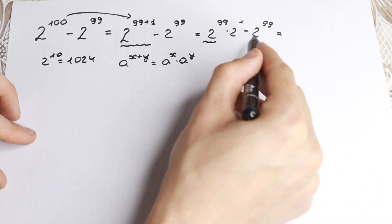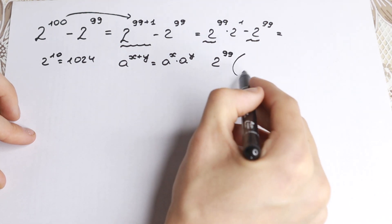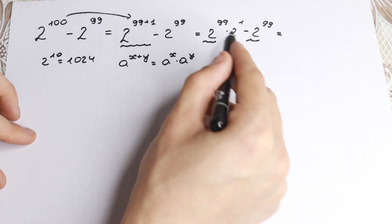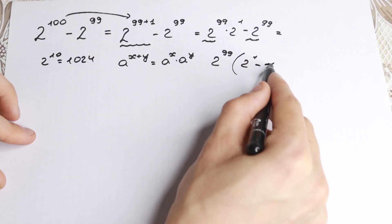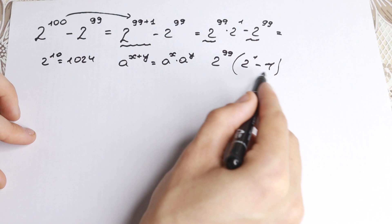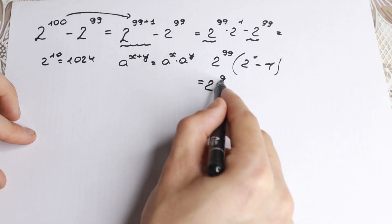Right here 2 to the 99 and 2 to the 99 are the same. So we will have 2 to the power 99 and in parentheses, if you factor it, right here we'll have 2 to the first minus 1. So as a result, 2 minus 1 equal to 1 and 1 times this parentheses equal to 2 to the power 99.